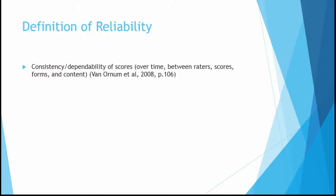Three or four slides in, we come to a definition of reliability. For simplicity, I'll use the definition from the textbook's glossary. Reliability is consistency, or dependability, of scores over time — meaning if we give a test today and again next week, we'll get similar results — between raters, meaning whoever scores the test will have similar results, and across forms and content used in the test. If those stay the same, we'll have consistency and dependability.